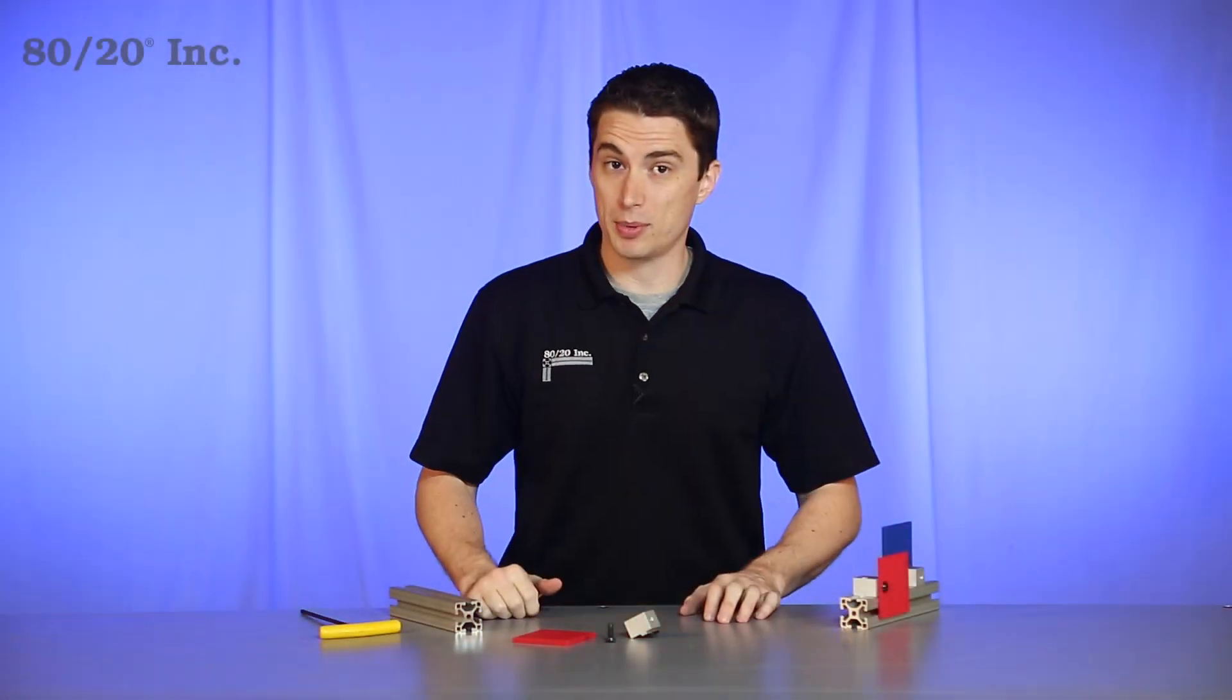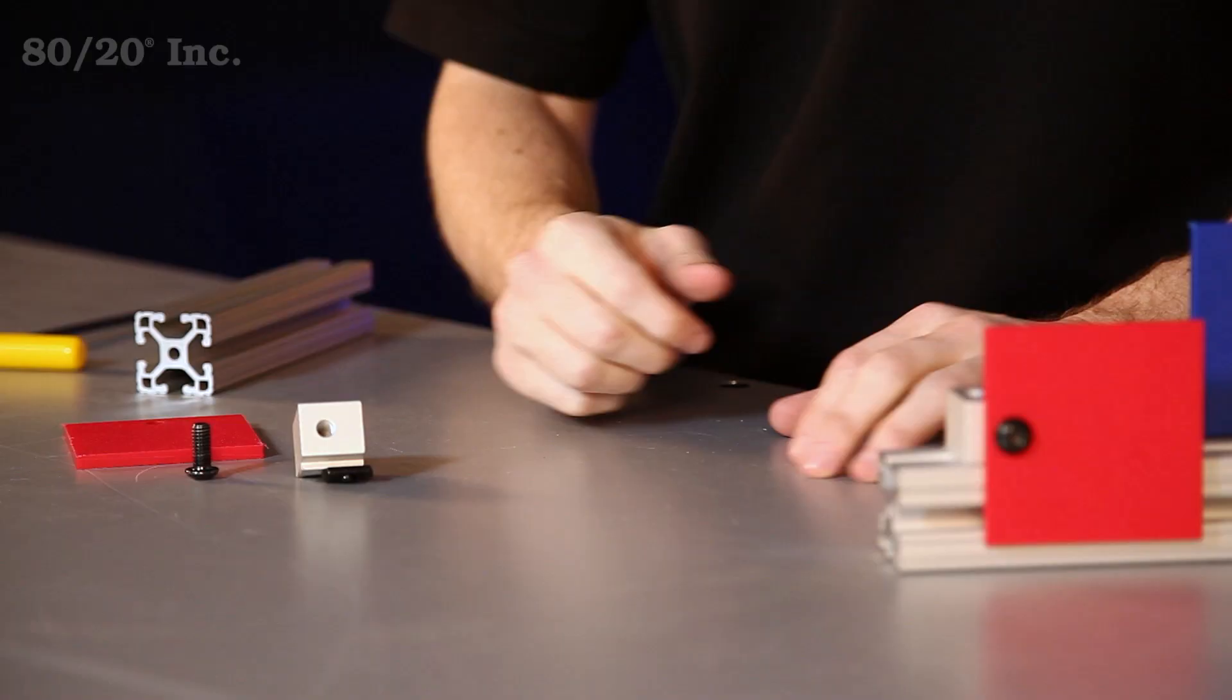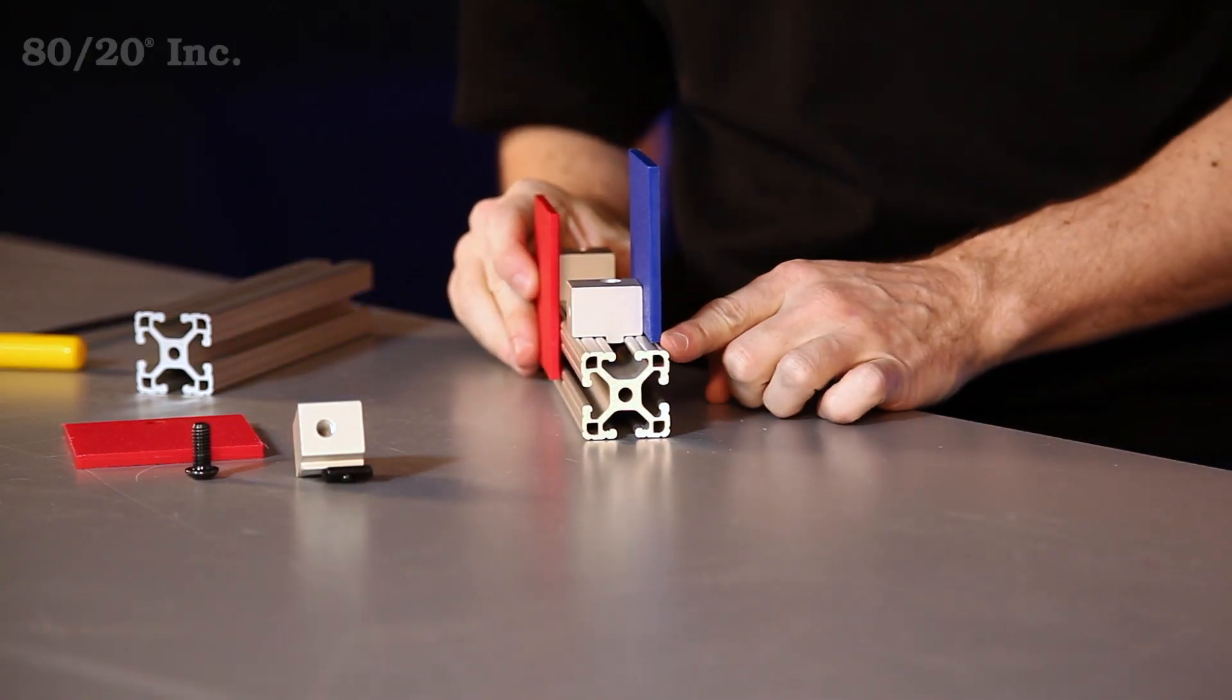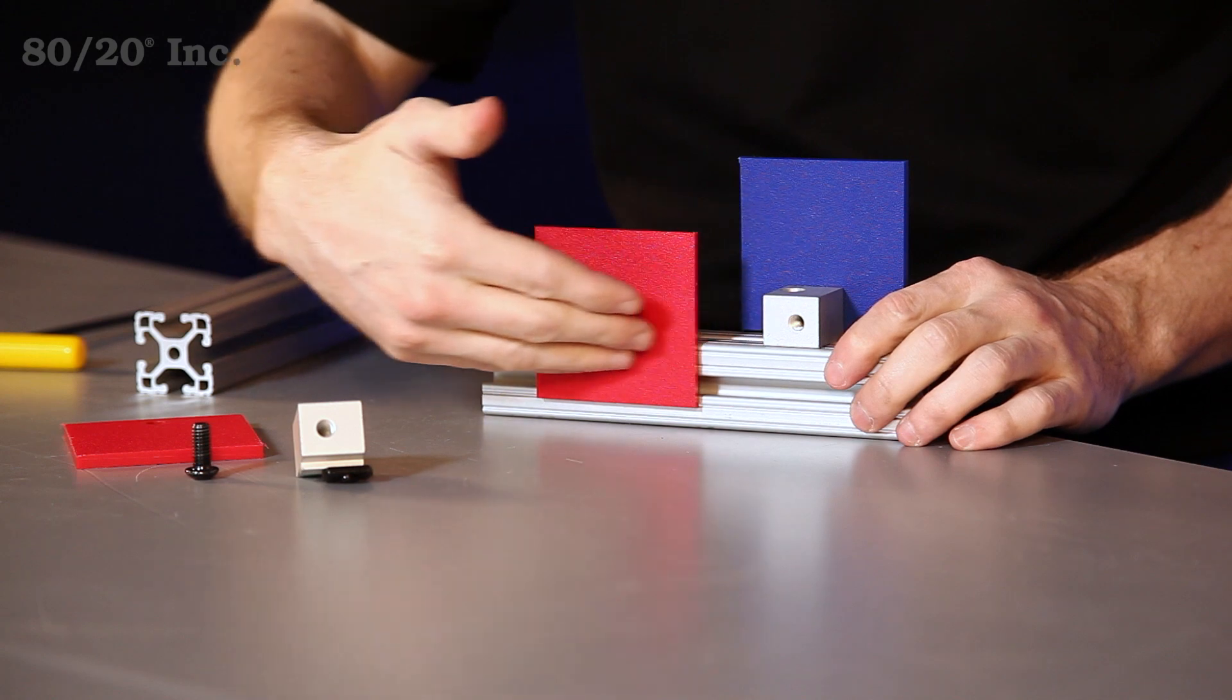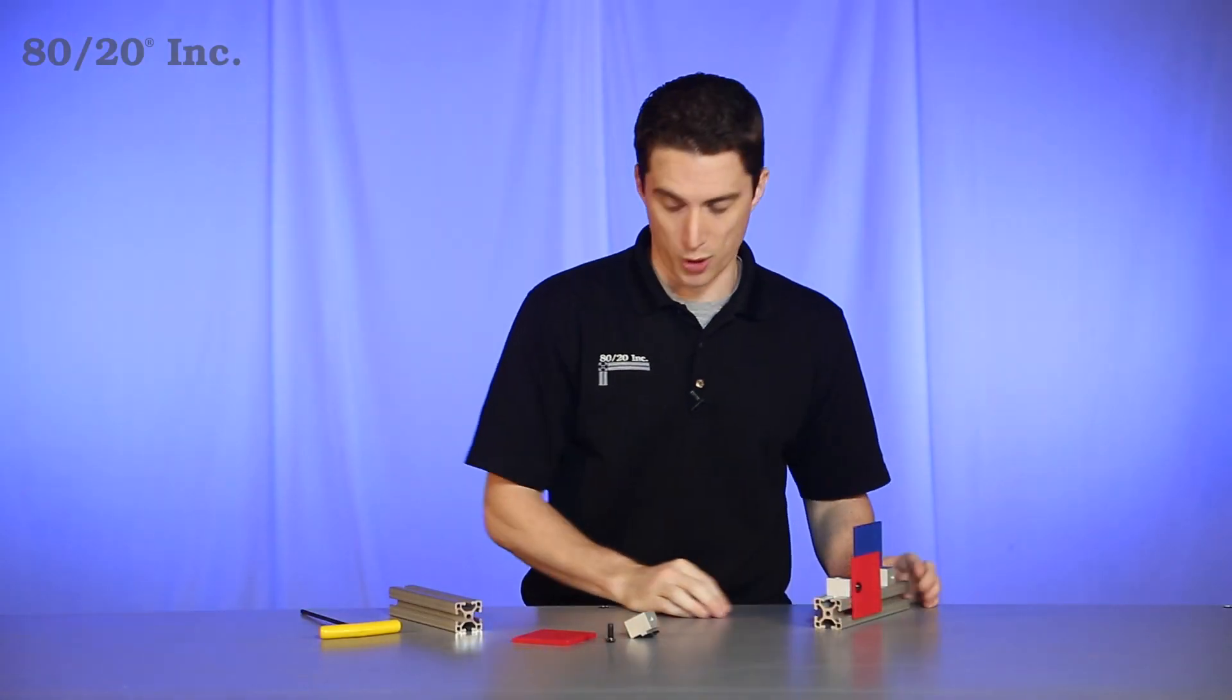Now when it comes to installing the panel mount block, the first thing you'll want to decide is how it's going to mount to the profile. Do you want it to be flush with the profile edge, or resting on the surface of the profile? In our example, we're going to rest it on the surface of the profile.